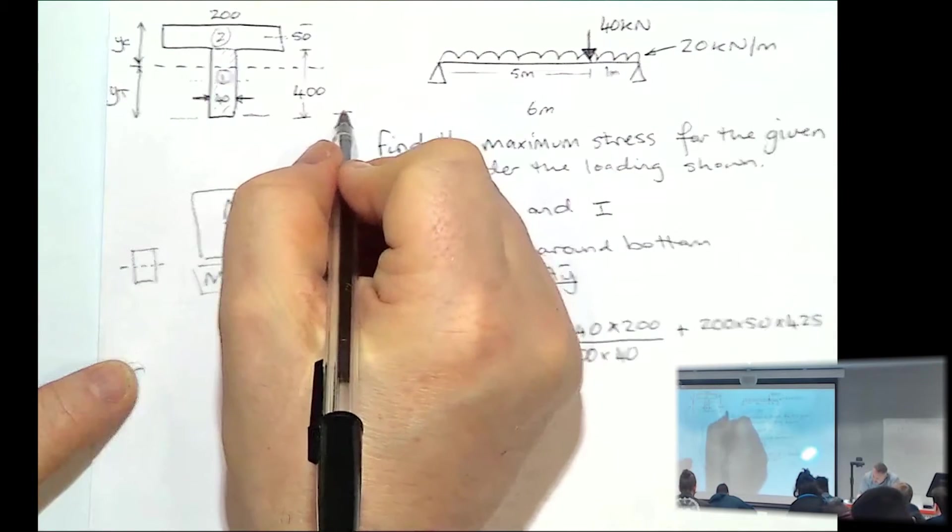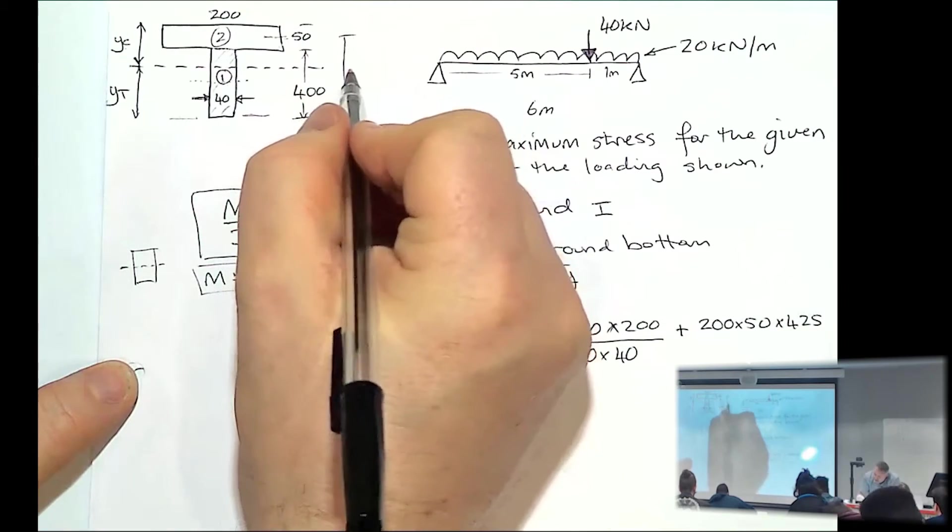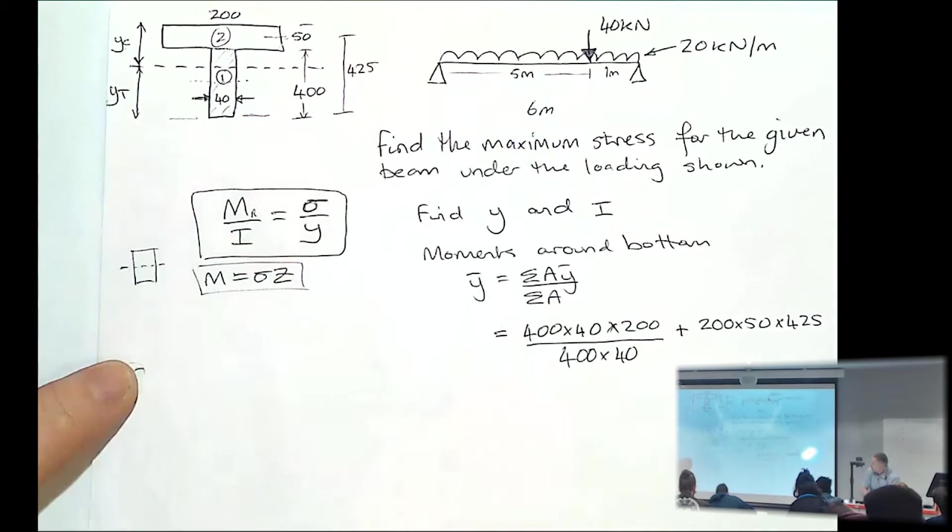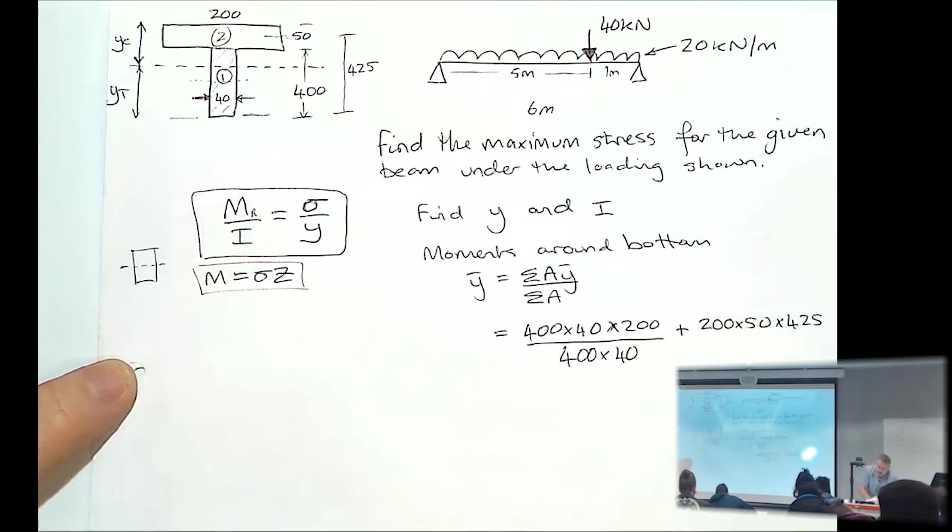So that's the distance from there, all the way to there, 125. Divided by the area.